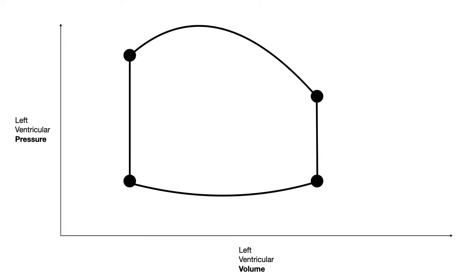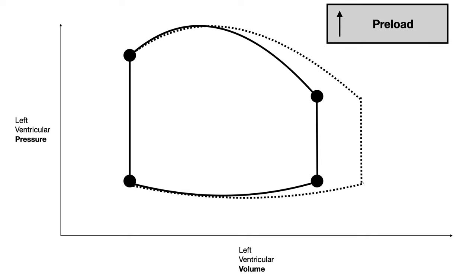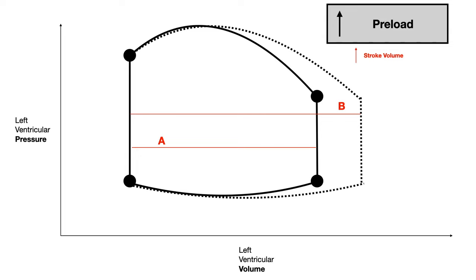Finally, let's talk about what happens when we increase preload. An increase in preload changes the graph from the solid to the dotted graph. There's really only one major change to know: stroke volume goes up. Stroke volume is the difference between end diastolic volume and end systolic volume — the right and left borders of the graph. Initially stroke volume was illustrated by red point A. When we increase preload and the graph stretches to the right, there's a greater difference between EDV and ESV, so stroke volume increases from red A to red B.